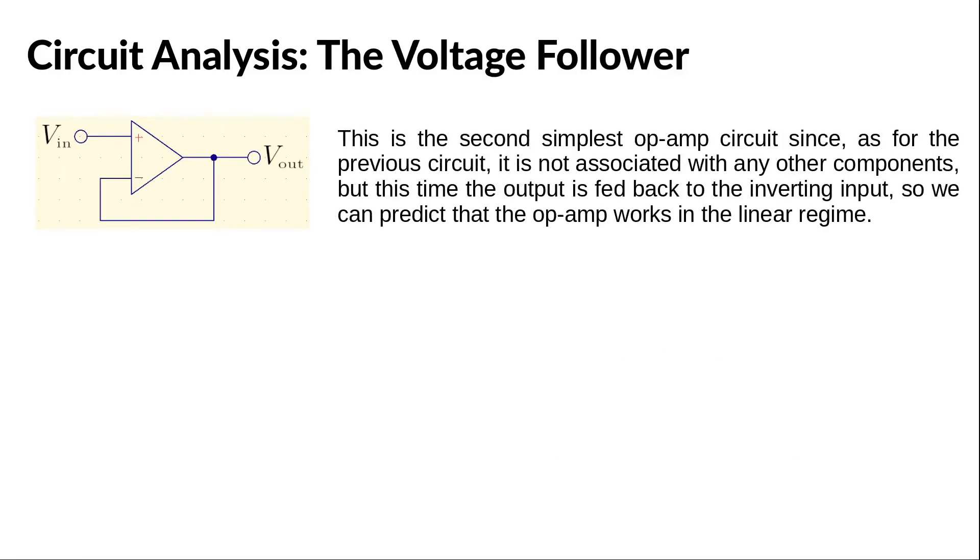The next simplest circuit is the so-called voltage follower. The first thing to notice is that there is a feedback from the output to the inverting input, so this time the regime is linear.